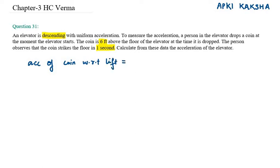If we have acceleration of coin with respect to lift, it equals acceleration of coin with respect to earth minus acceleration of the lift. Now the acceleration of coin with respect to earth is g. We consider the lift's acceleration as A.